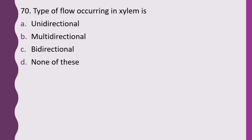Question 70. Type of flow occurring in xylem is: unidirectional, multidirectional, bidirectional, or none of these. The correct answer is option A — flow in xylem is always unidirectional.